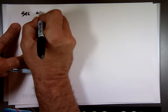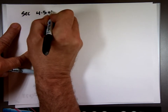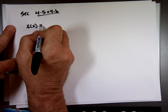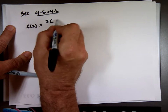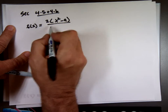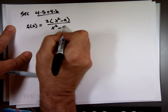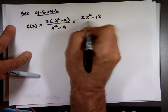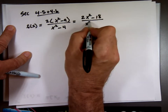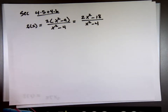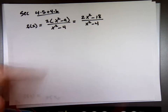Section 4.5 and 4.6. F of x equals 2 times x squared minus 9 over x squared minus 4. You can actually write that as 2x squared minus 18 over x squared minus 4. I want you to go through all the stuff we learned in sections 3 and 4: increasing, decreasing, inflection point, min, max, and find all the stuff about it.